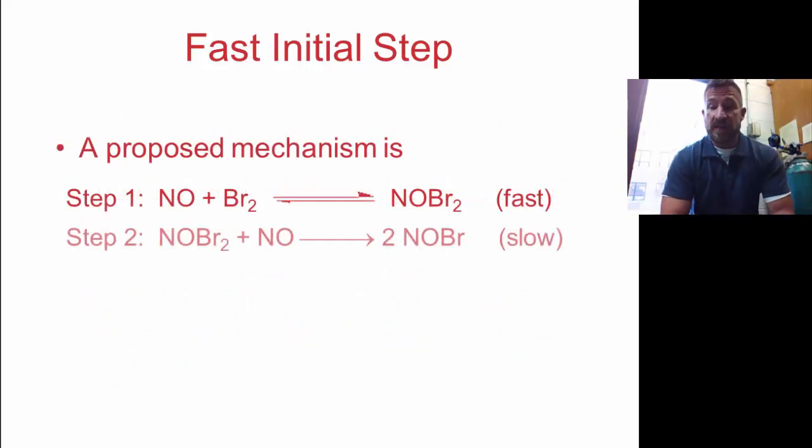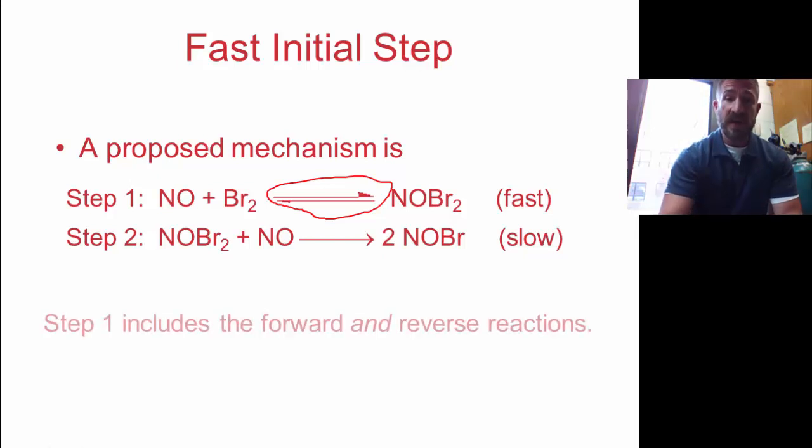So let's look at a proposed mechanism for that. The proposed mechanism includes not only a slow step but a fast step. And something we see different in this fast step is we have an arrow going both ways. That tells us that's an equilibrium reaction. And that's important because that's going to allow us to do substitutions when we write the rate law for this reaction. Step one includes both a forward and reverse reaction.